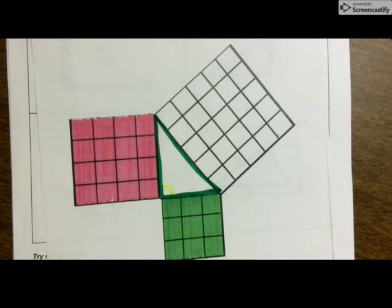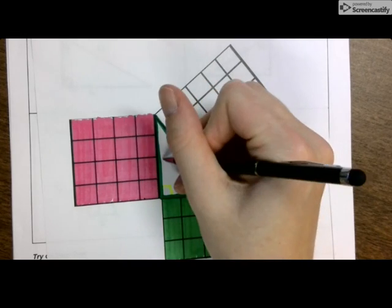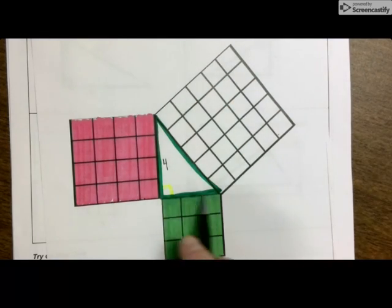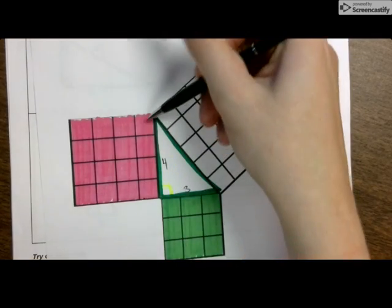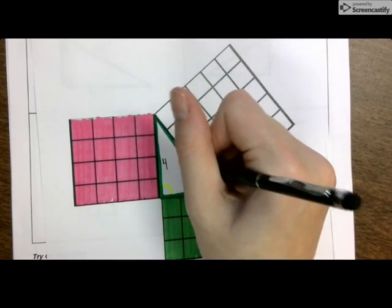Now if you count the boxes like this is one, two, three, four. That means that this side is four. What would this side be? Three. And what would this side be? Five.